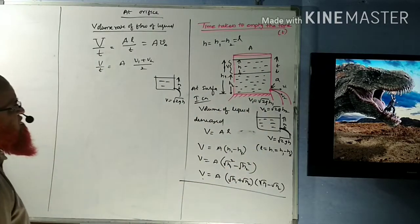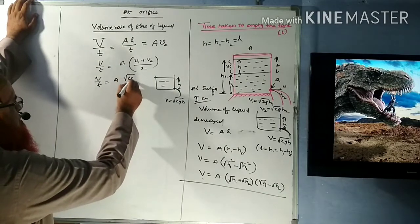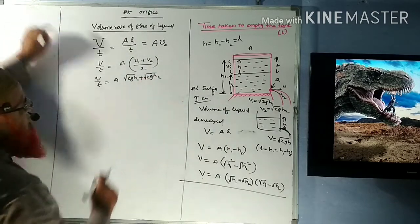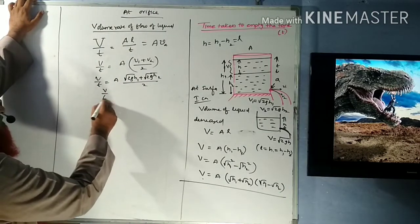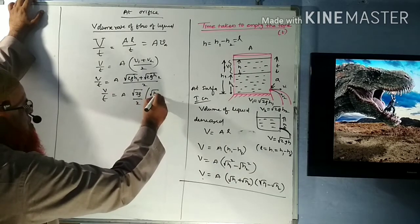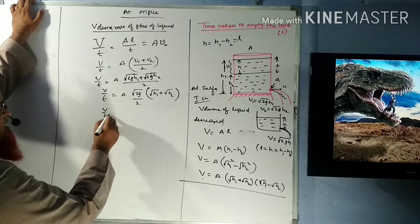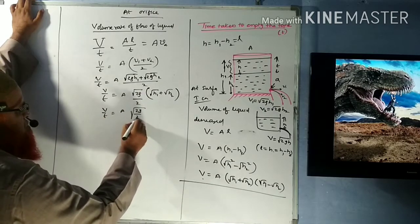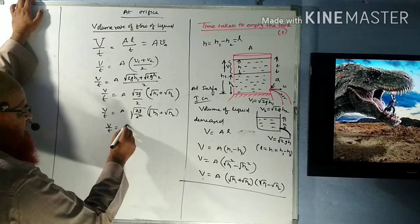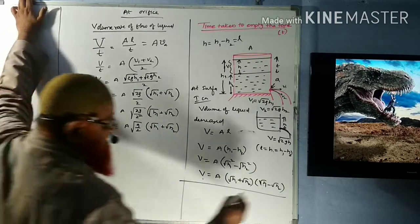Substituting V1 and V2, the volume rate of flow becomes: V/T = a × (√(2gH1) + √(2gH2)) / 2. Taking √(2g) common and simplifying, this gives V/T = a × √(g/2) × (√H1 + √H2). We call this equation 2, and the volume expression A(√H1 + √H2)(√H1 − √H2) is equation 1.